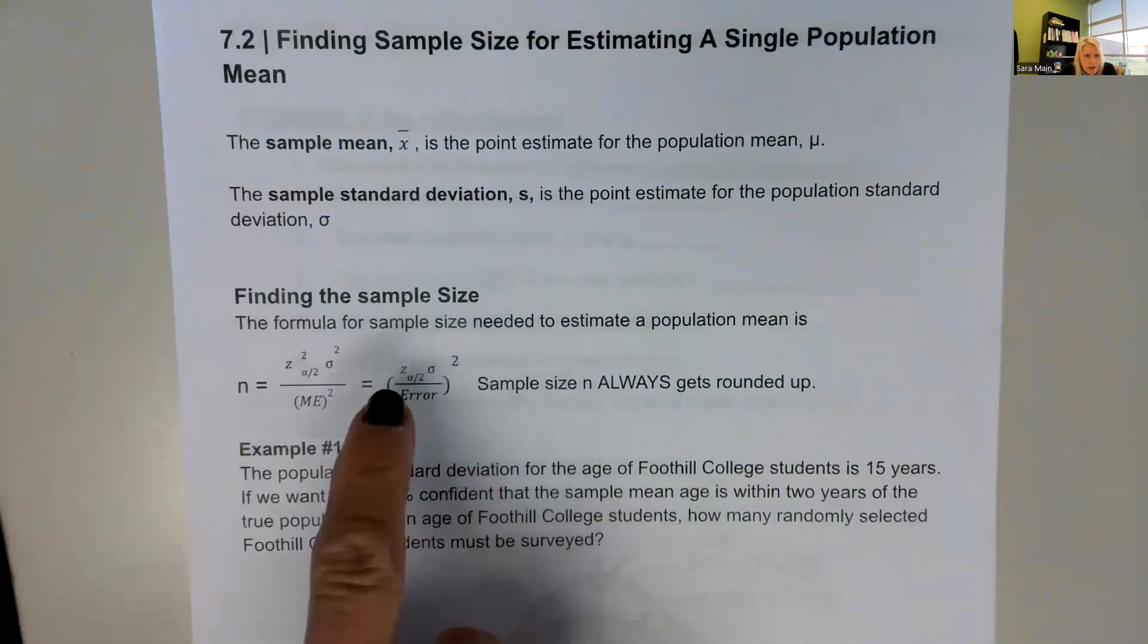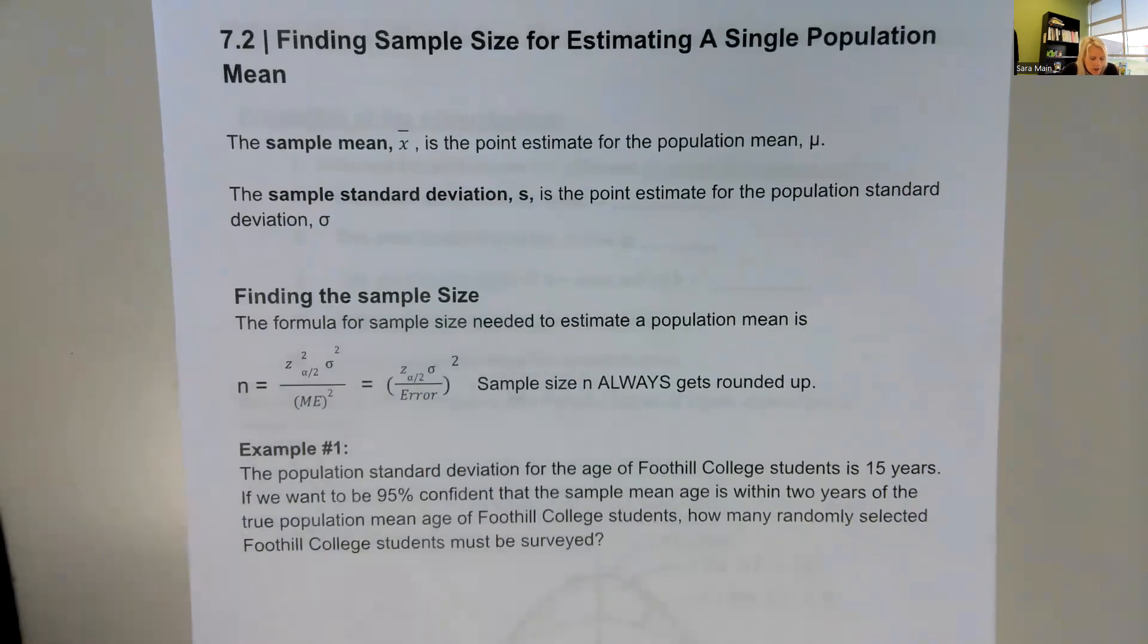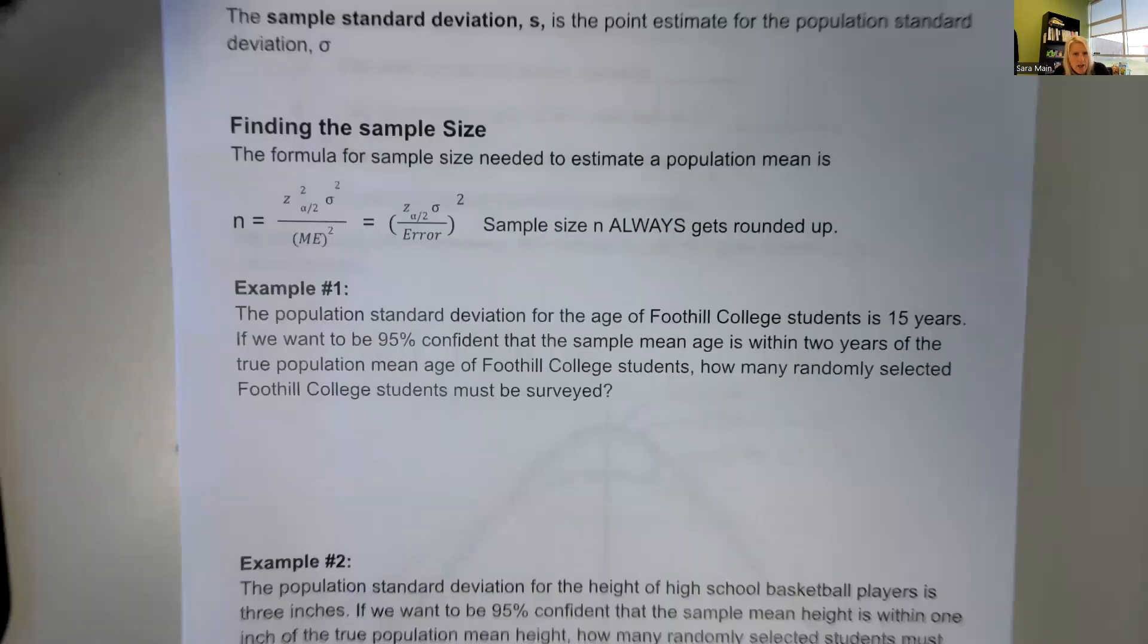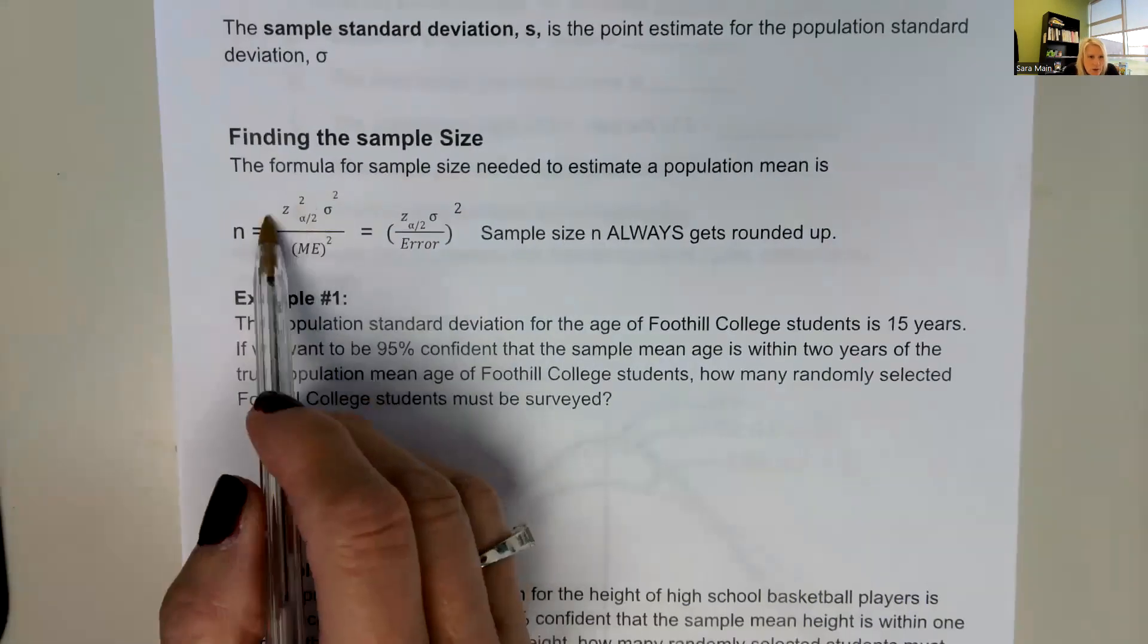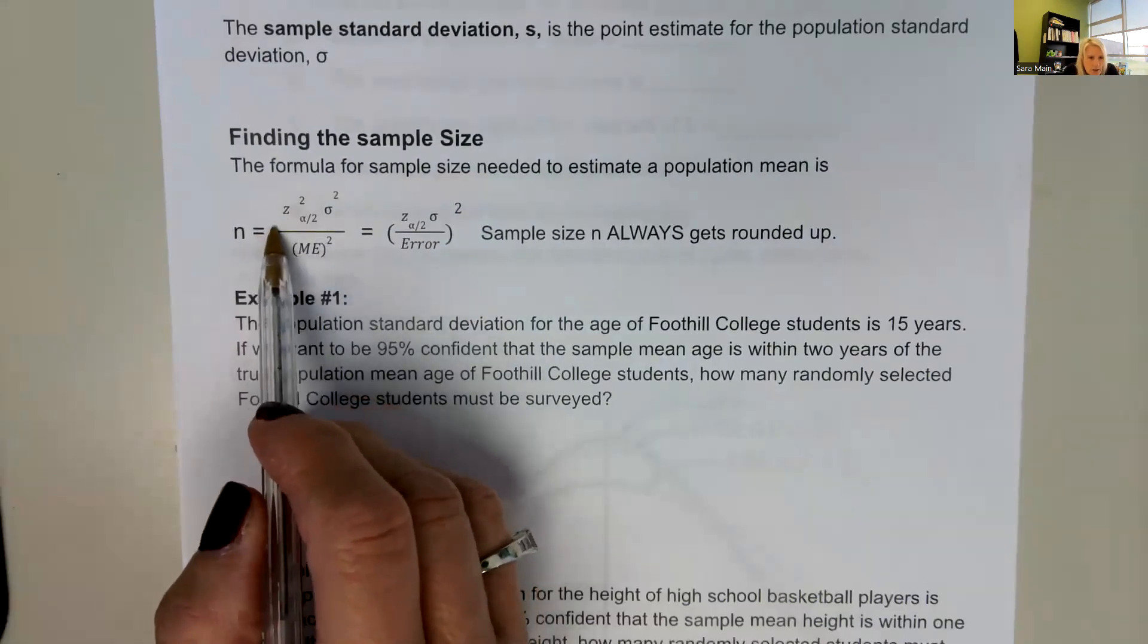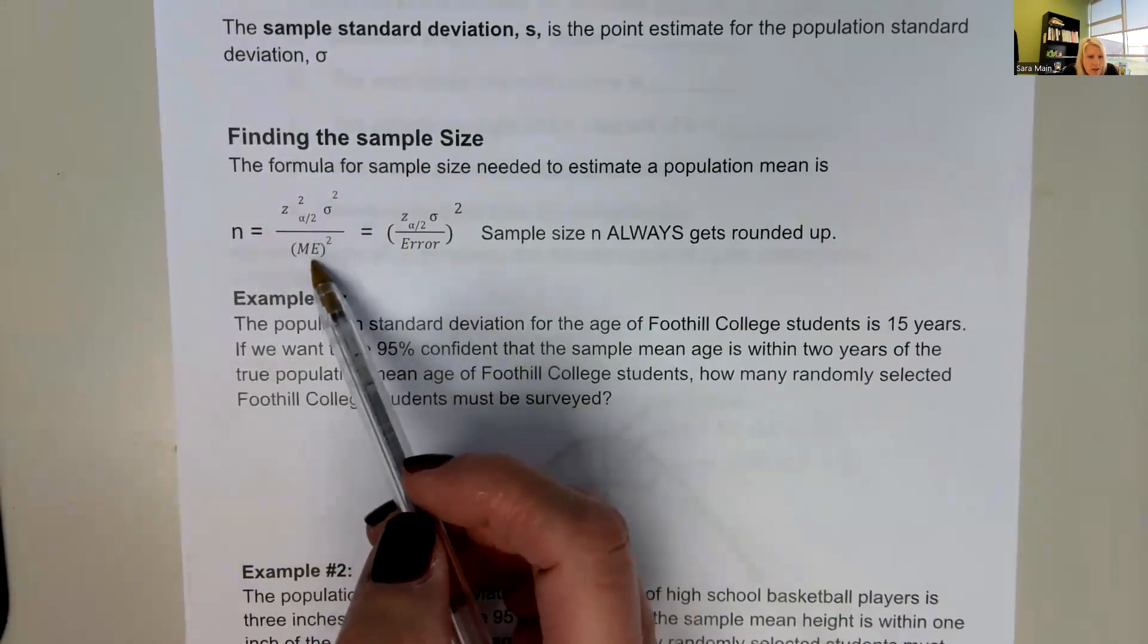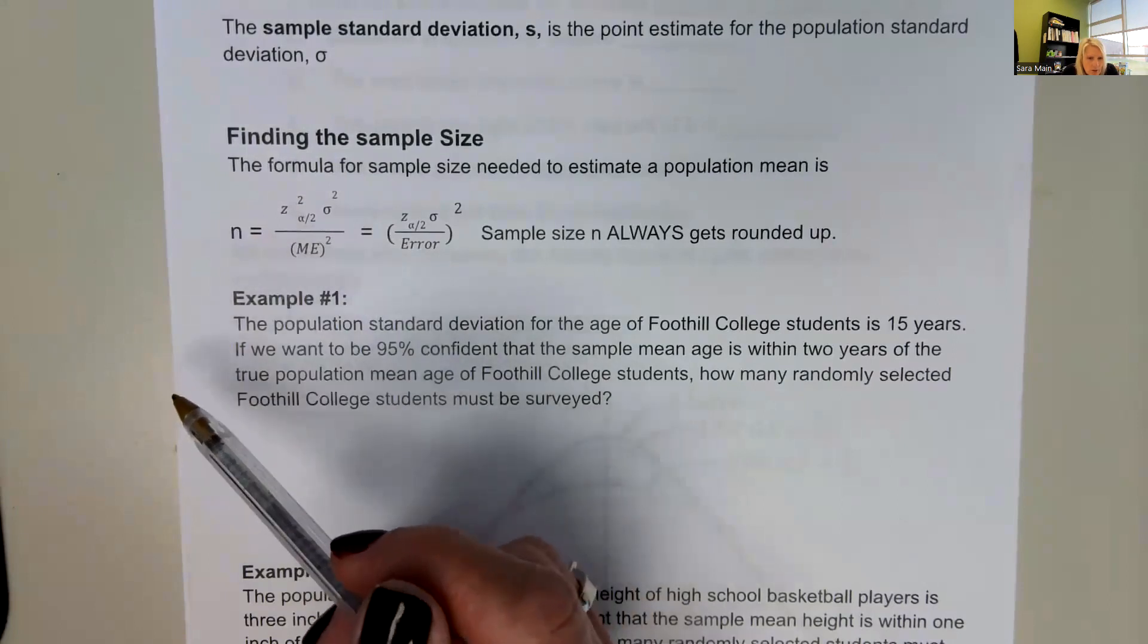So finding the sample size, we're going to need three things. We'll need to know what confidence we would like to have, and that confidence will help us determine our critical Z value here. And then we need to know the standard deviation and then the error that we want to be within, the margin of error.